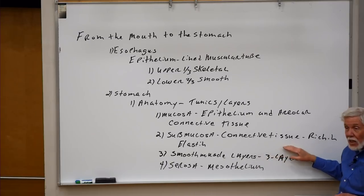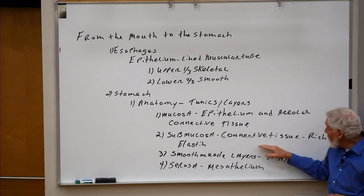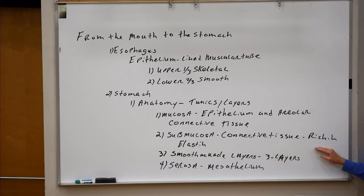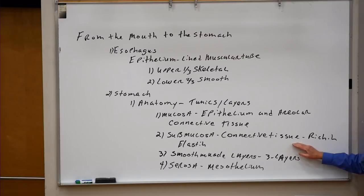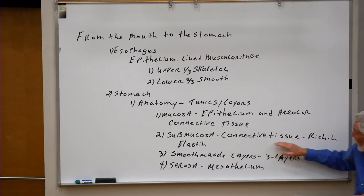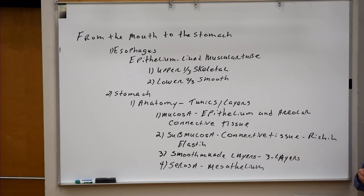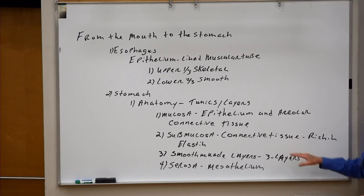The submucosa is basically connective tissue enriched for elastin, and that should be no surprise. After a big meal you can actually distend your stomach, and that distension comes from the submucosa's elastin filaments being able to stretch.